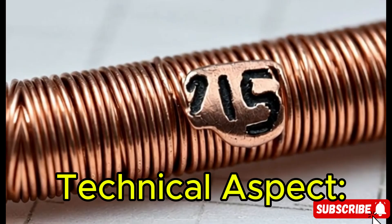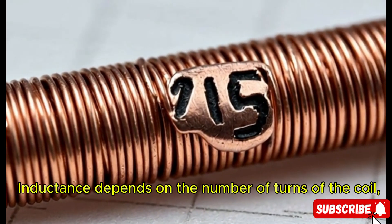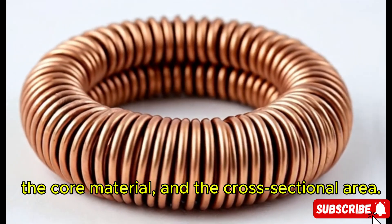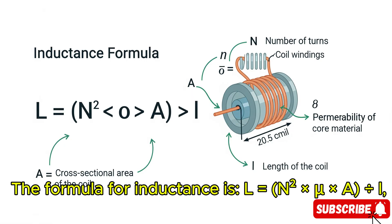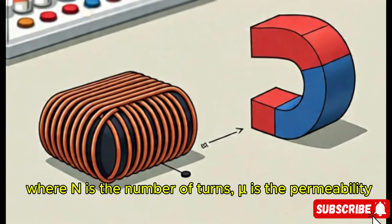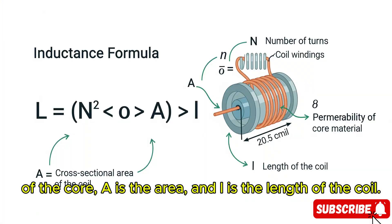Inductance depends on the number of turns of the coil, the core material, and the cross-sectional area. The formula for inductance is L = N² × μ × A / l, where N is the number of turns, μ is the permeability of the core, A is the area, and l is the length of the coil.